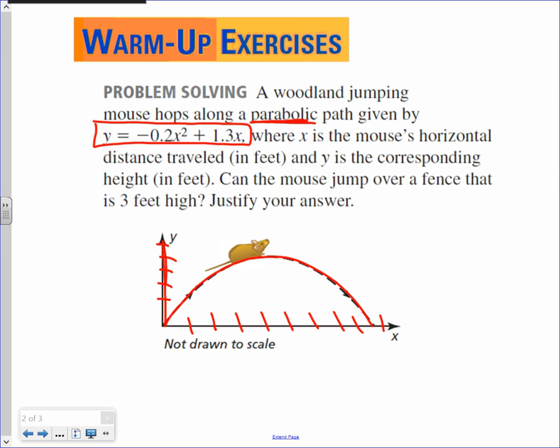Notice, every point of the position of the mouse is described by the quadratic function. They want to know, can the mouse jump over a fence that is three feet high? The cat's after the mouse. With this parabolic pathway, can we tell whether he actually makes it over the fence or not? In other words, is the vertical distance from here to here more than three feet? Everything I've taught you up to this point will allow you to answer this mathematically.